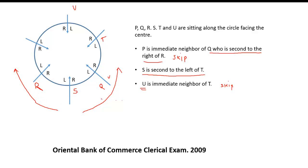If you take Q like this, P is the immediate neighbor of Q, so P can be here or here. But in one case Q is not an immediate neighbor of P, so that possibility is not there. Also if you take this as Q then your R will be here, but since both neighboring positions of T are occupied by R and Q we must leave a vacancy for U. So this is also not possible.